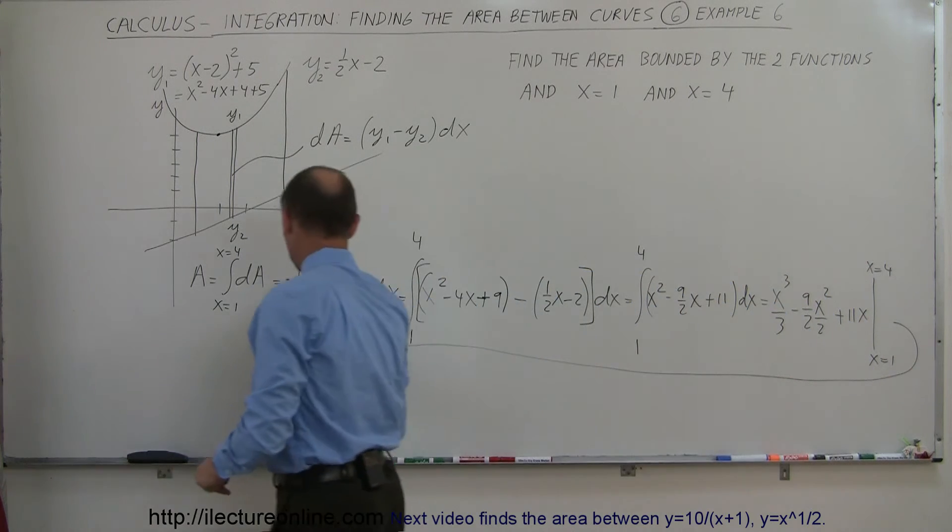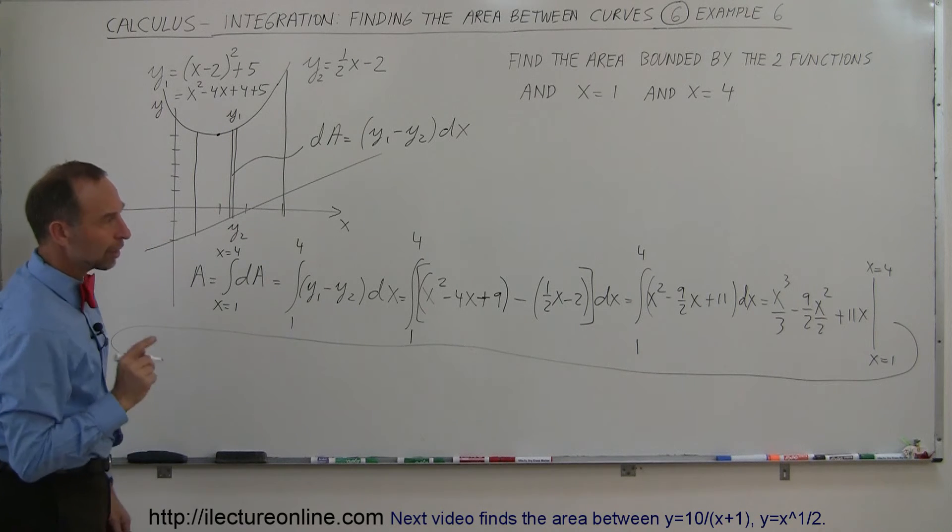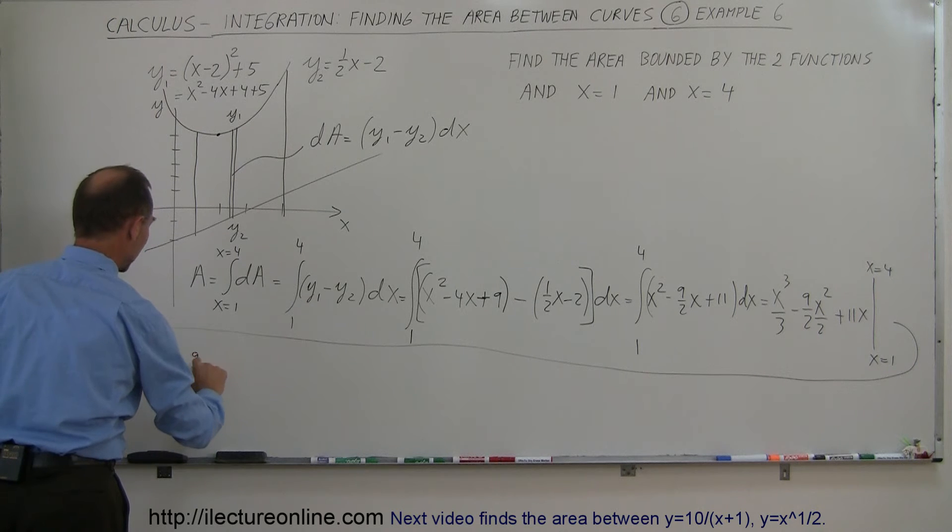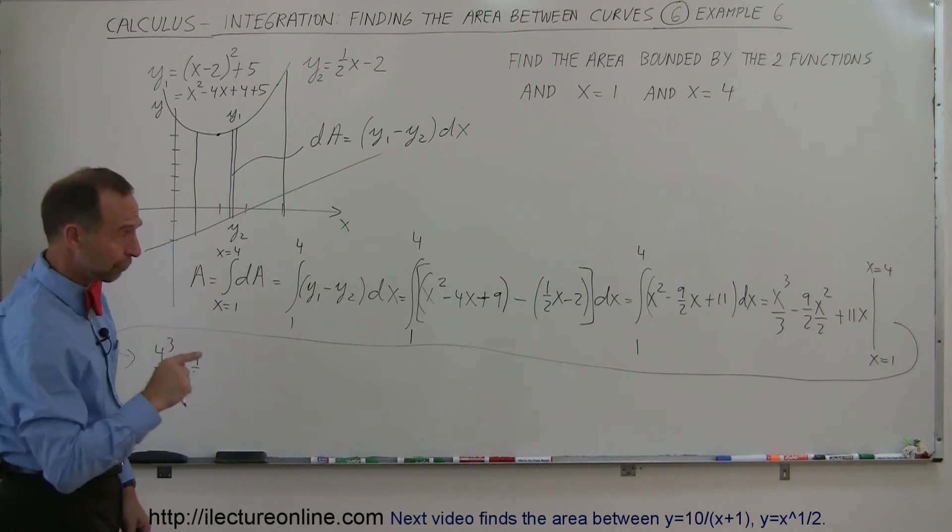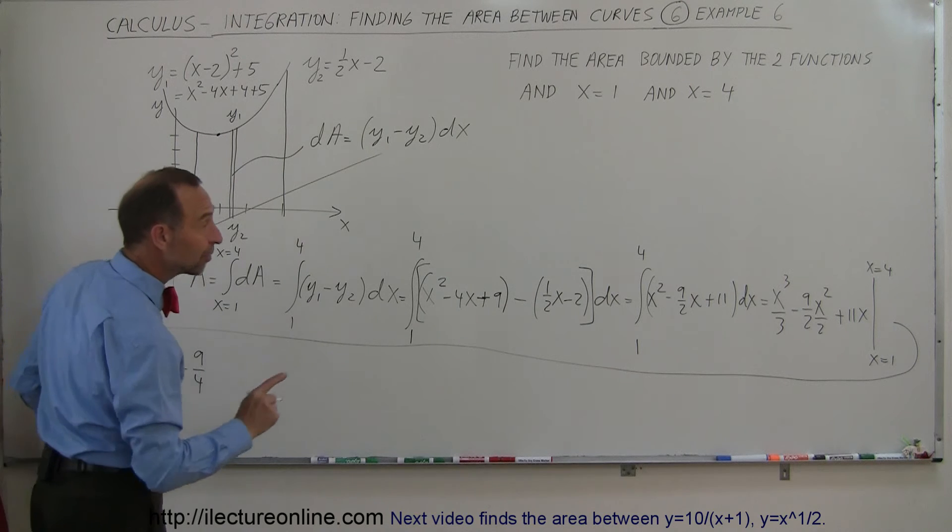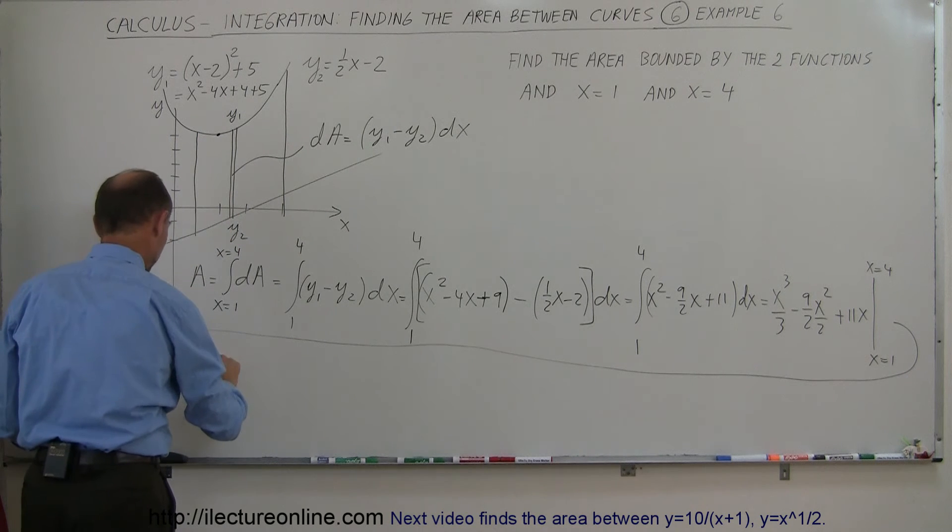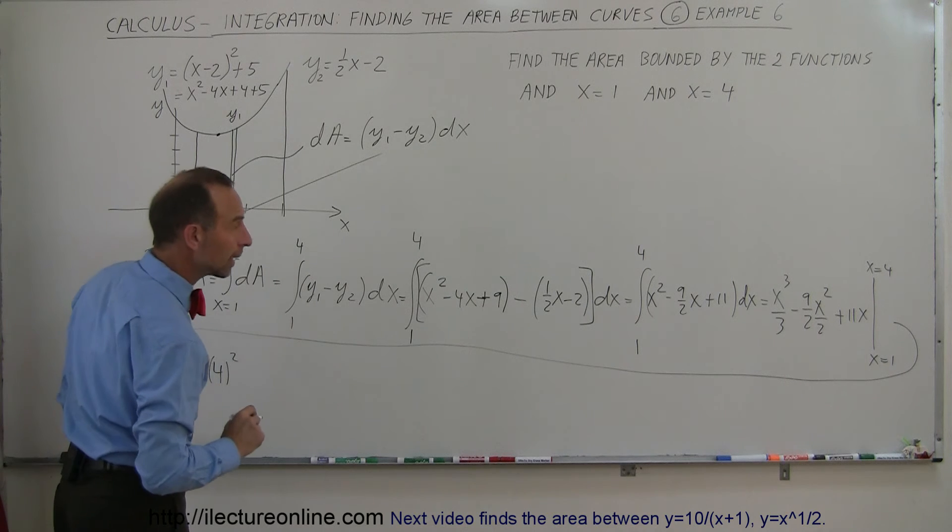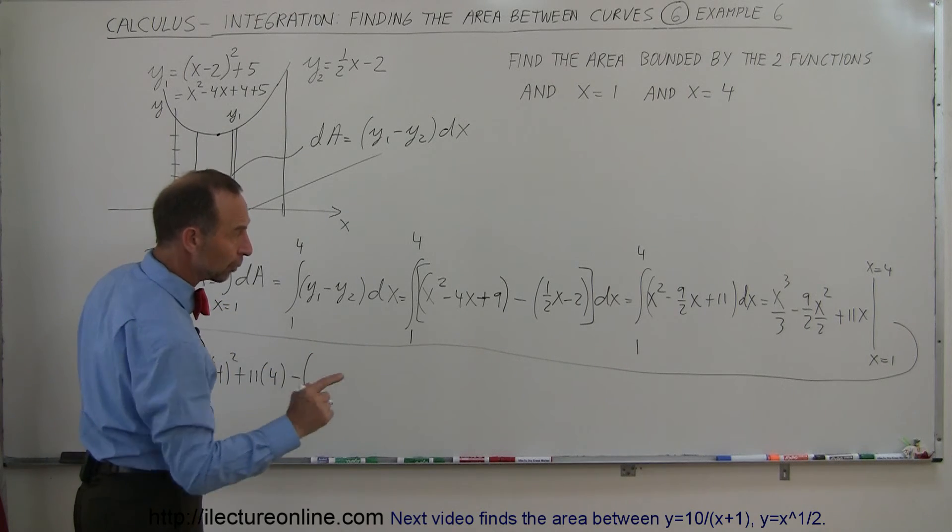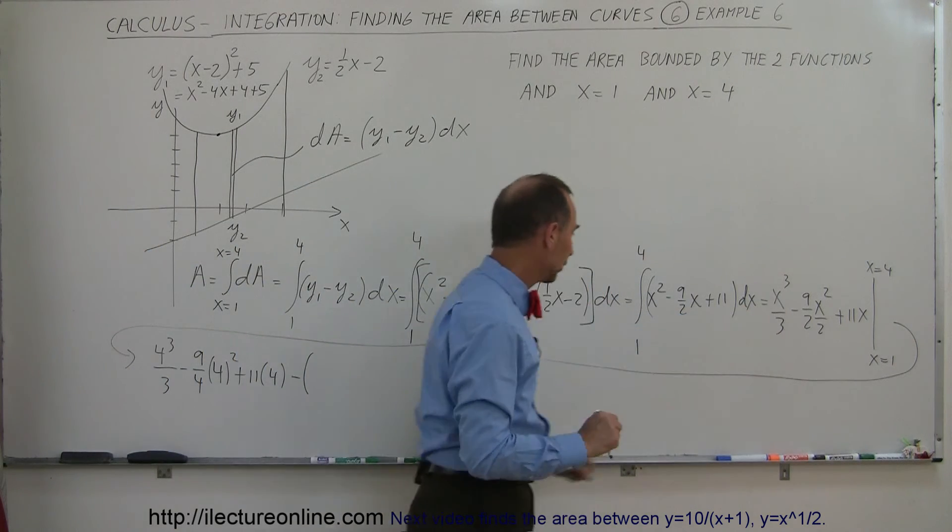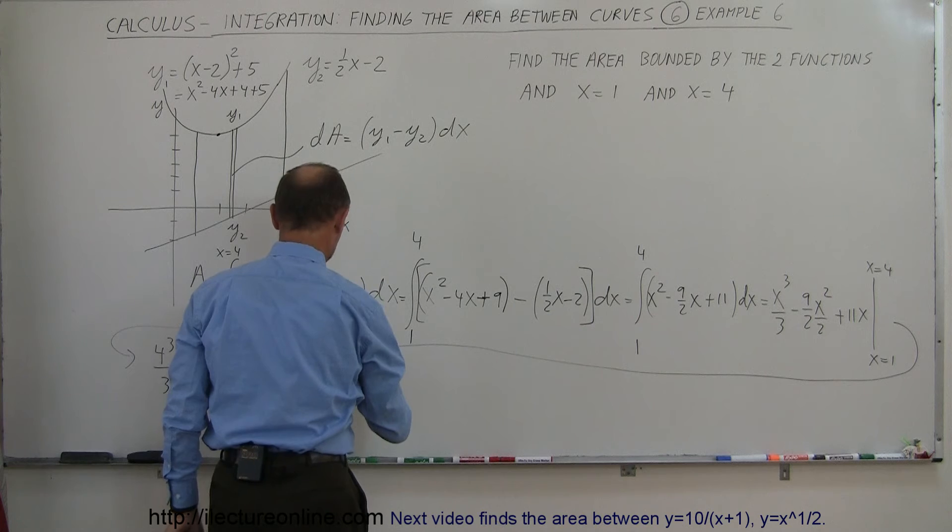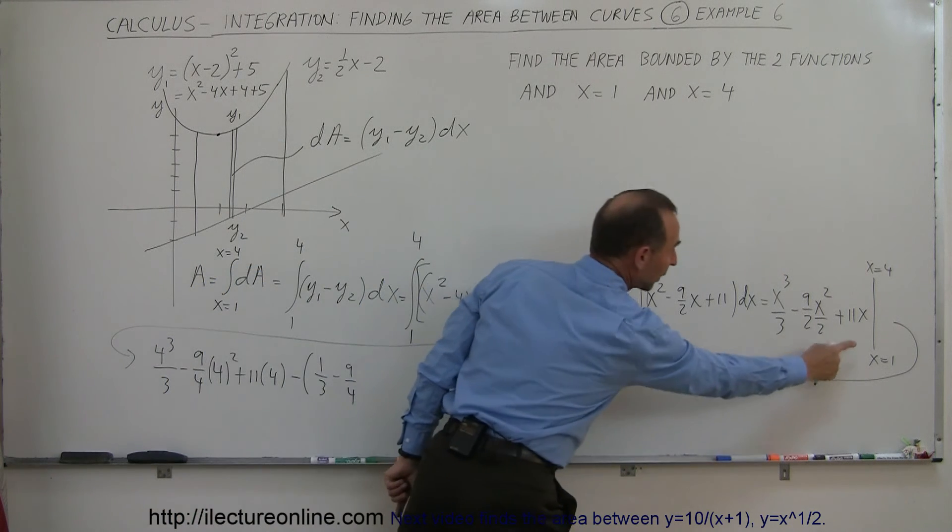And so let's plug in the limits and see what we get. When we plug in the upper limit, plug in a 4, we get 4 cubed divided by 3 minus 9 over 2. Well actually I can write 9 over 4 because that's 2 times 2, so 9 over 4 times x squared, and x is 4, so that would be 4 squared. Plus 11 times 4 minus when I plug in the lower limit, I plug in a 1, so I have 1 over 3, minus 9 over 4, and plus 11.